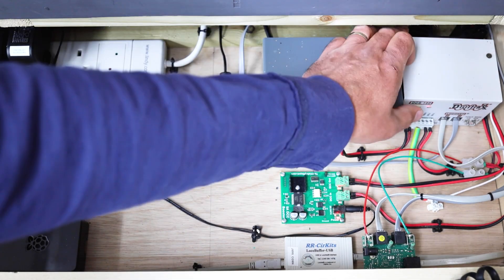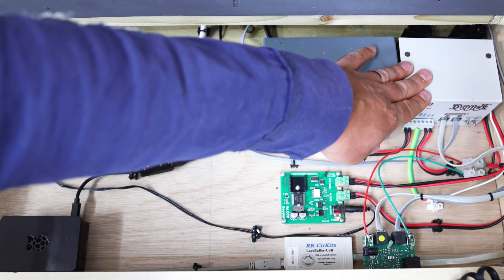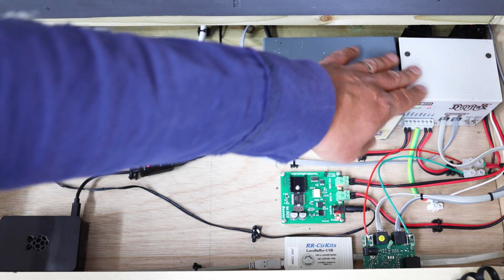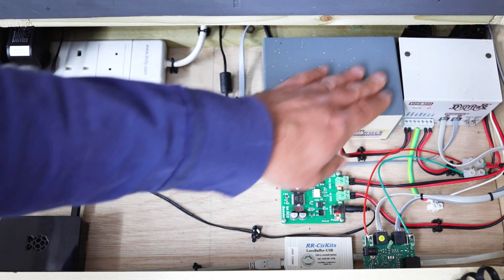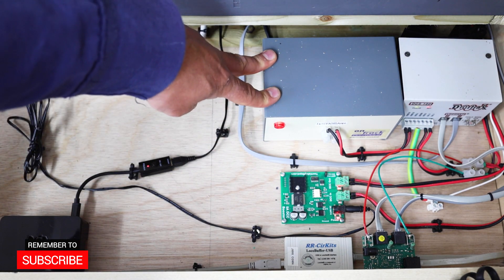On this side, I've got the DCS-100, which is the Digitrax command station. I've had this for over 20 years, still going strong. I might eventually replace this with the latest version and use this as a booster, but for now that's working perfectly. This is the power supply for the command station.